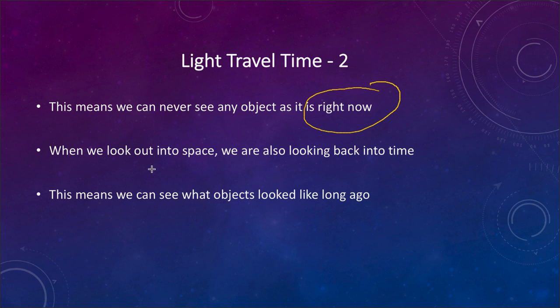When we look out into space, we are looking back into time — we can see objects as they looked long, long ago. We can see some very distant galaxies as they looked very early in the history of the universe; they don't look anything like that anymore. There are likely objects out there that we see that no longer even exist, but we are still seeing light that traveled from them many billions of years ago, and the information about their destruction has not yet reached us.